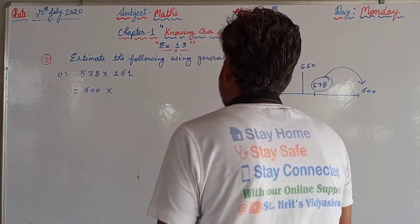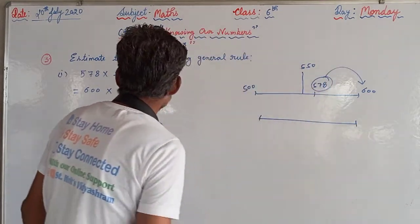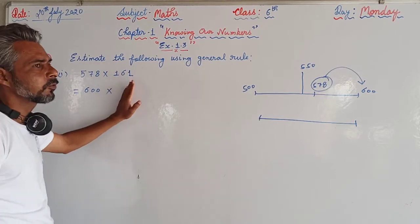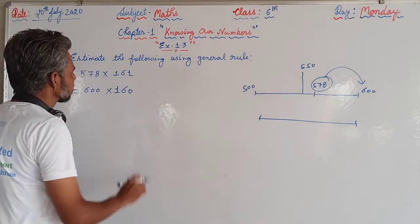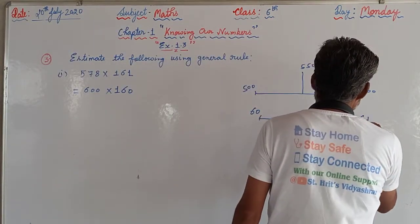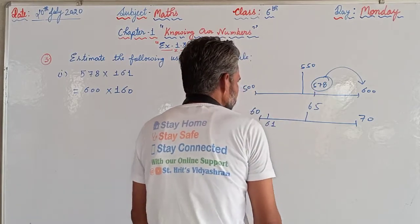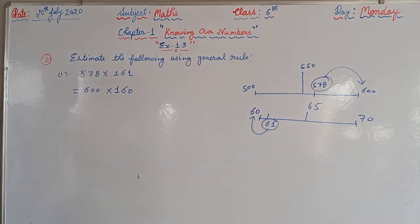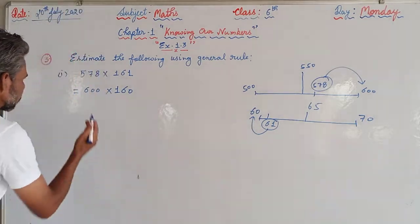At the same time, 161 — we are rounding off to the nearest tens. If we round off 161 to nearest tens, it will become 160. Because for 161, we consider 61, which lies between 60 and 70. In between, 65 is the midpoint, but 61 is on the left-hand side of 65, so it will be rounded off to 60. Hence 161 rounds to 160.